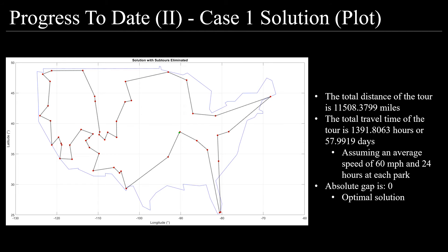I set up specific outputs for trip distance and total trip time assuming 24 hours. This is my solution for case one with a total distance of 11,508.4 miles, a total travel time of 1,391.8 hours or 58 days, assuming an average speed of 60 miles per hour and 24 hours at each park. The absolute gap of the solution is zero, indicating an optimal solution.